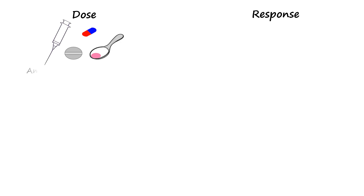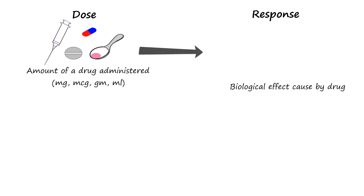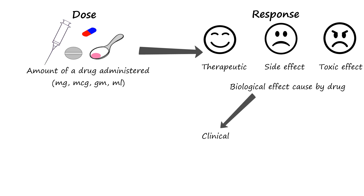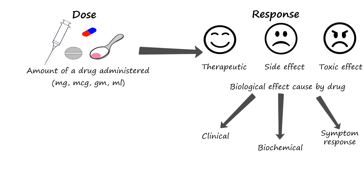First, let's define what dose and response are. Dose is the amount of a drug administered to achieve a desired therapeutic effect. It is typically measured in units such as milligrams, micrograms, or milliliters. Response refers to the biological effect that occurs in the body as a result of the administered dose. This can include therapeutic effects, side effects, and toxic effects. The response can be measured in various ways — for example, we can measure the response to antihypertensives by clinically measuring blood pressure, the response to insulin by measuring blood glucose, and the response to analgesics by pain scores.